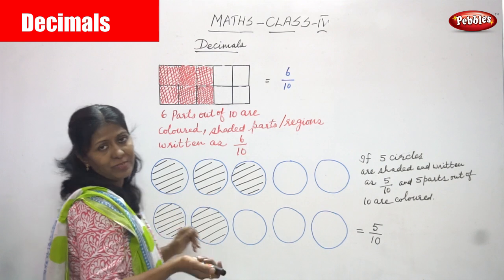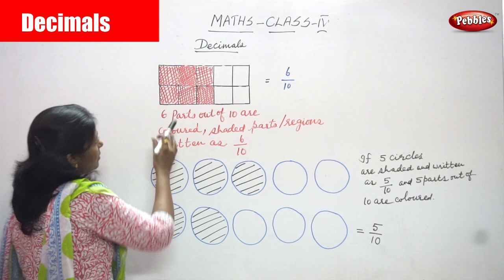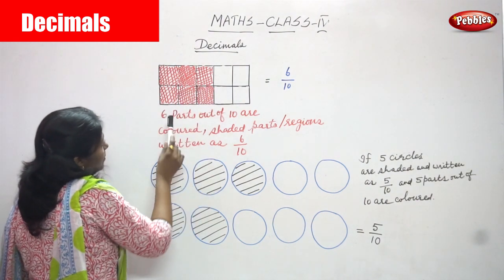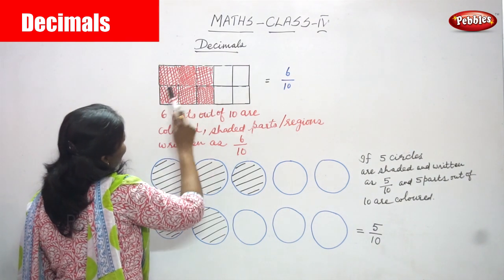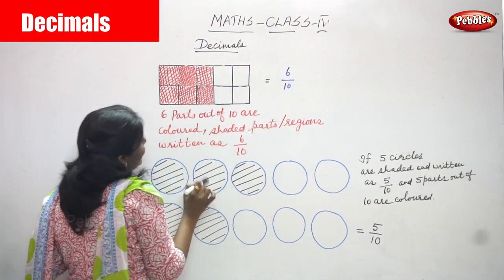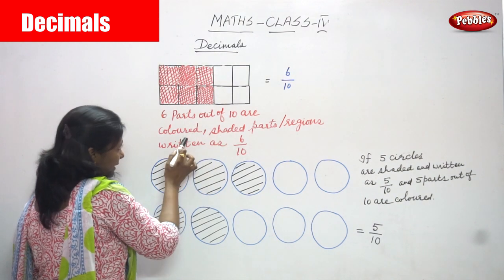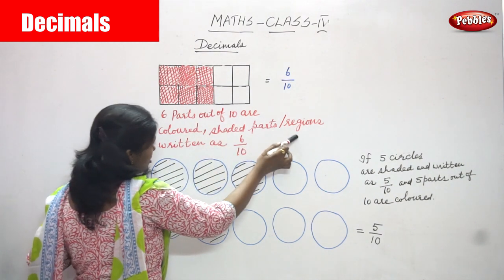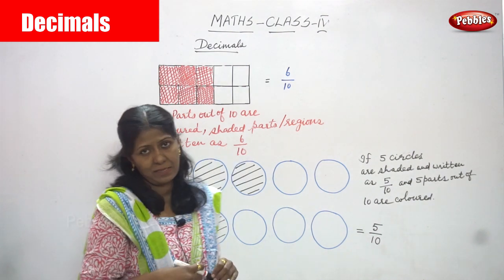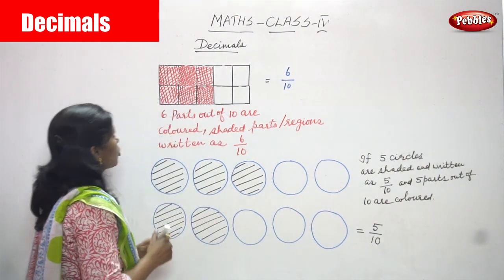I'll repeat once again. This is the box I've drawn — how many boxes? 1, 2, 3, 4, 5, 6, 7, 8, 9, 10. Totally I've drawn 10 boxes. Only 6 boxes I've shaded in red color. So 6 parts out of 10 are colored. Shaded parts are written as 6 by 10 or 6 out of 10. This is the decimal fraction.